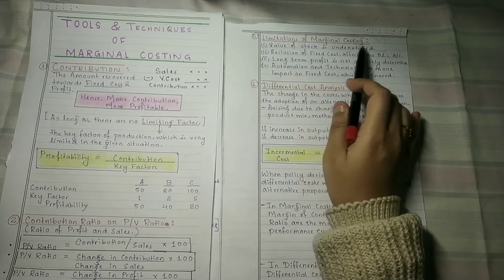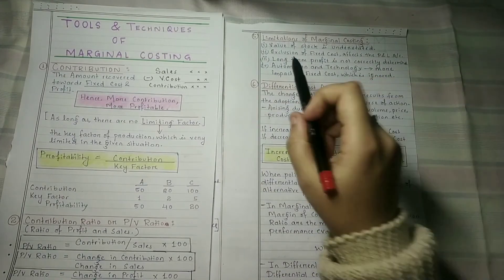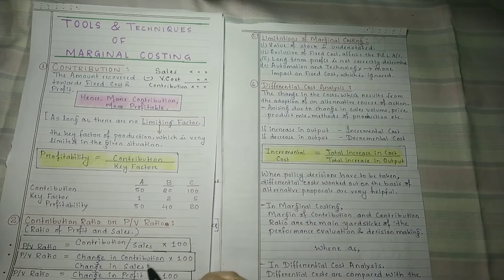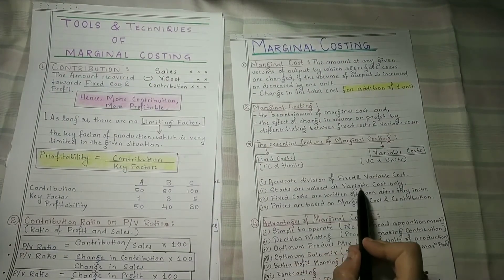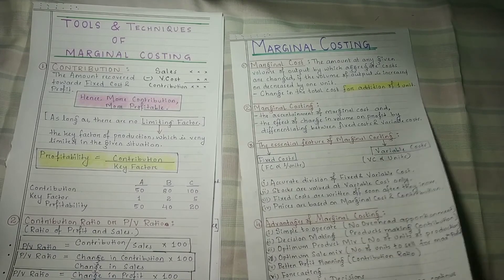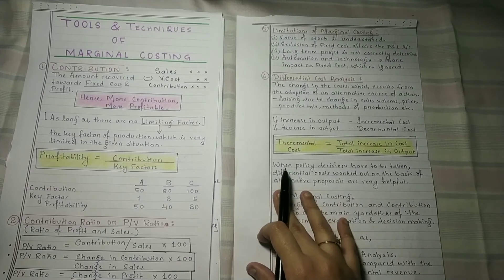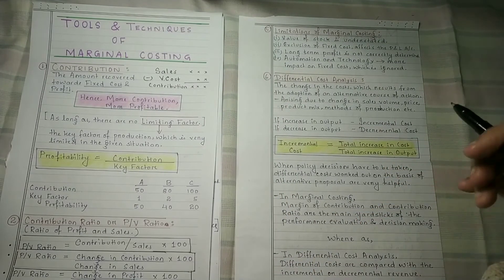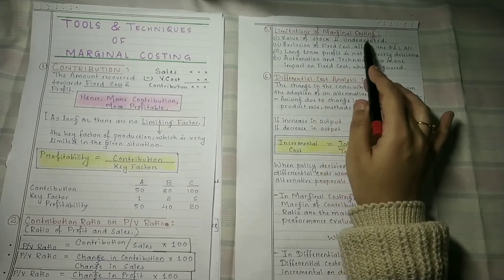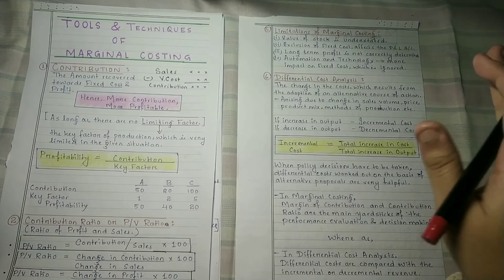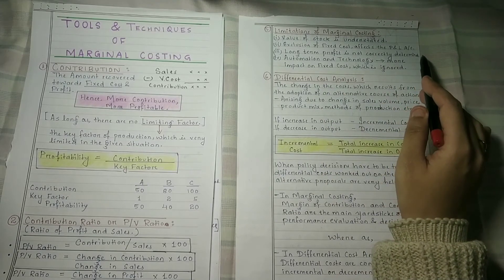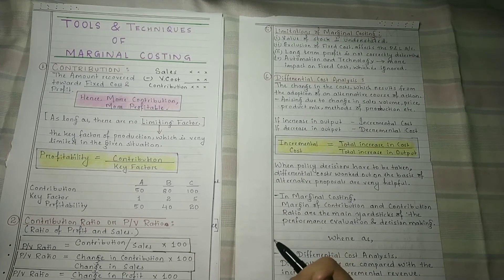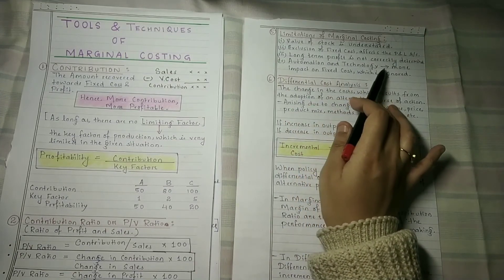What are the limitations of marginal costing? The first limitation is that the value of stock is understated. As I told you, stocks are valued at variable cost only, ignoring fixed cost — this has an impact on the profit and loss account. The second limitation is that long-term profit is not correctly determined using marginal costing.